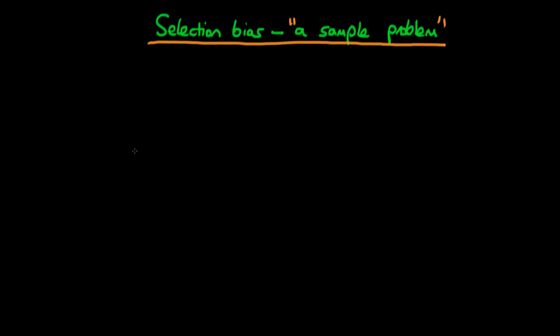In this video, I want to talk about how we can view selection bias as an issue with samples. And that's going to lead us on, in future videos, to a discussion of matching and propensity scores.